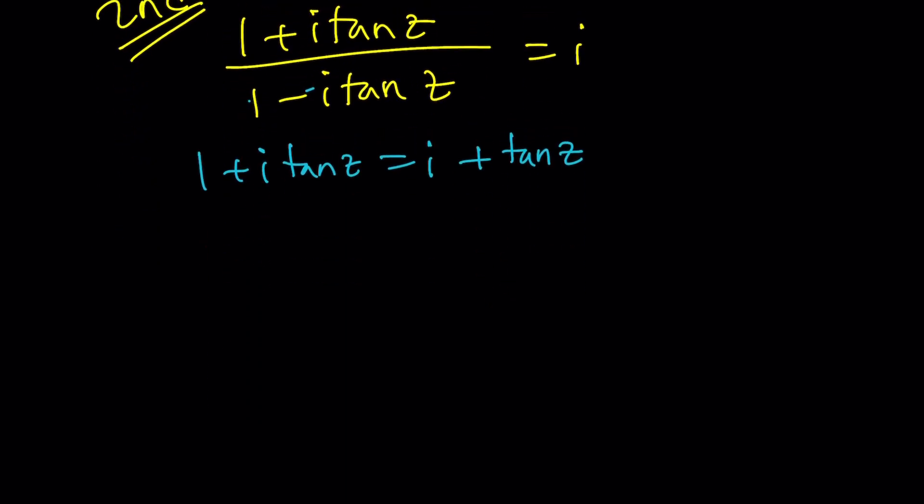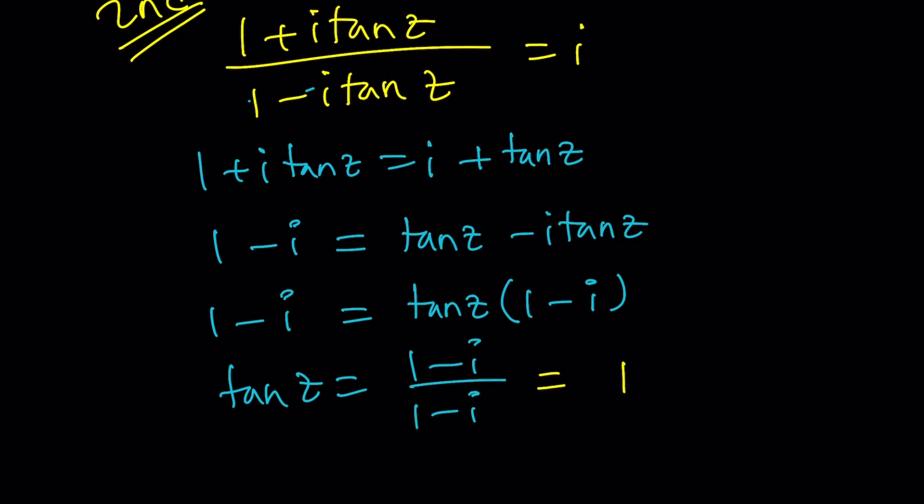Now, let's go ahead, and since we're trying to solve for z, let's put the z terms on the same side. Subtract i, and then subtract i tangent z. And then something miraculous is going to happen. I'm going to take out tangent z, and then 1 minus i is going to appear. And tangent z is going to be 1 minus i over 1 minus i. Isn't that beautiful? And isn't that just 1? And the answer is yes. Tangent z is 1.